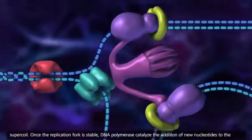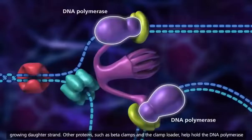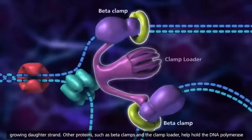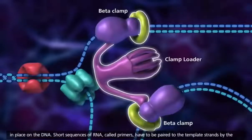Once the replication fork is stable, DNA polymerase catalyzes the addition of new nucleotides to the growing daughter strand. Other proteins, such as beta-clamps and the clamp loader, help hold the DNA polymerase in place on the DNA.